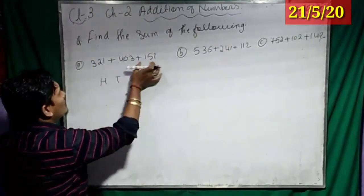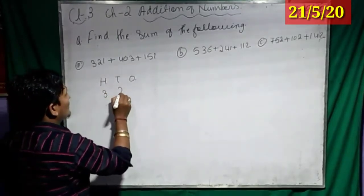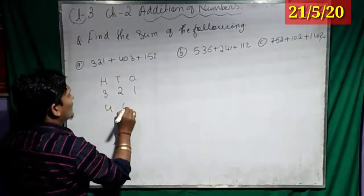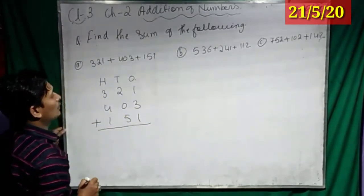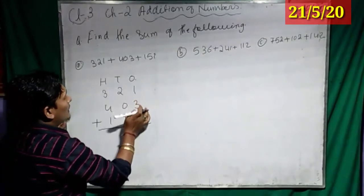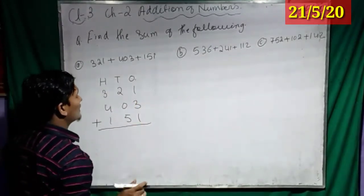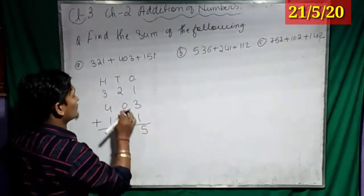So now, we have to write the number: 321, 403, 151. Okay? Now, write it. 1 plus 3 plus 4, how much? Yes, 5. Then, 2 plus 0 plus 5, how much?